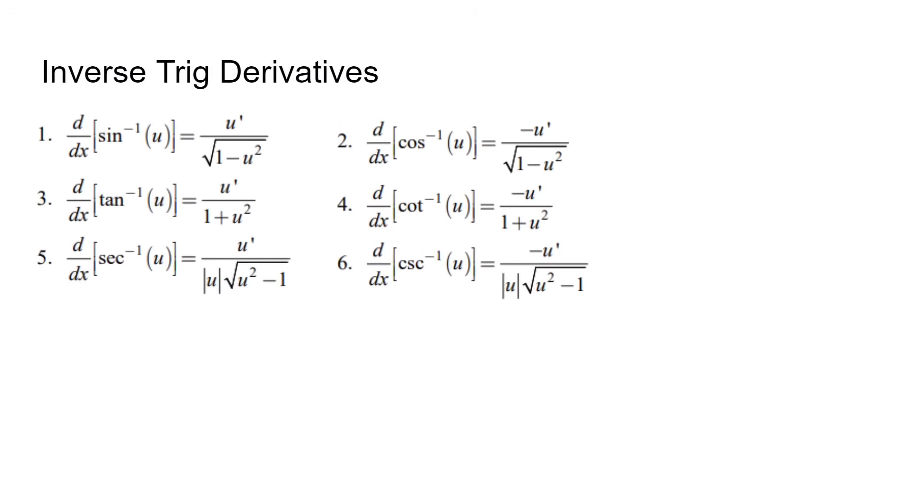The inverse of trig functions also have special forms, which are shown here. They are pretty simple, and here's a quick example using arc tan of 3x. Make sure to use the chain rule when needed, such as multiplying by 3 for this problem.